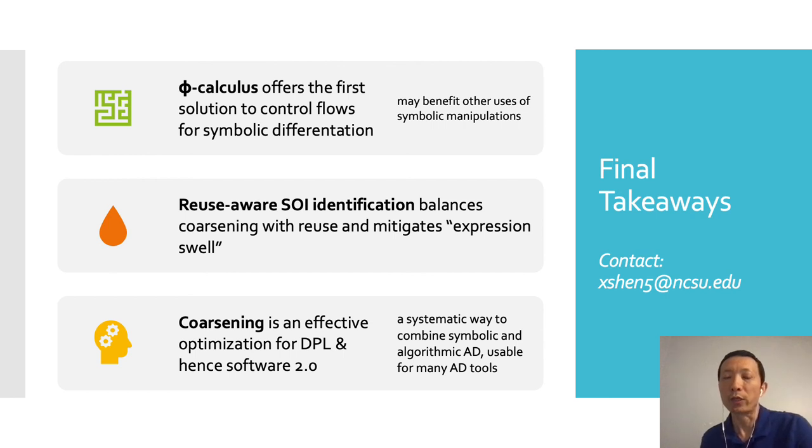There are three final takeaways. First, phi calculus offers the first solution to control flows for symbolic differentiation. It may also benefit the uses of symbolic manipulations beyond differentiation. Second, reuse-aware SOI identification balances Coarsening with reuse and mitigates expression swell for symbolic differentiation.